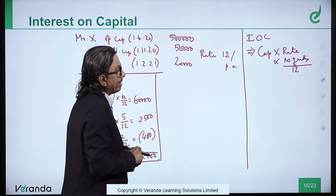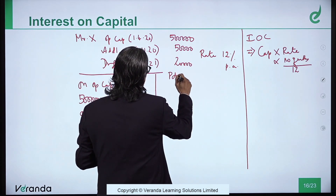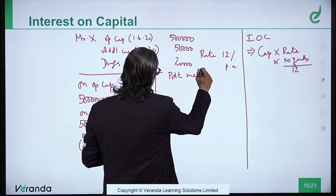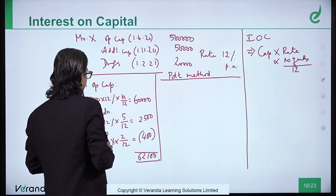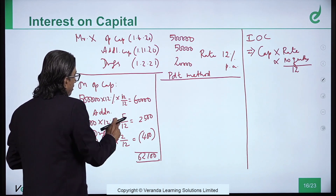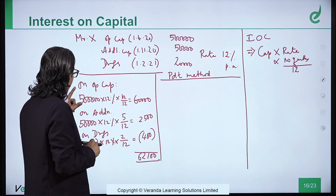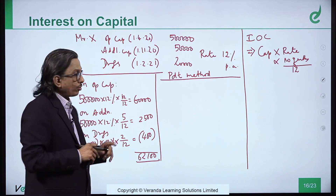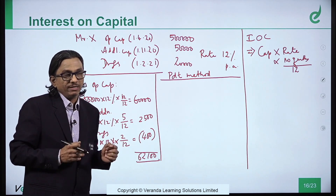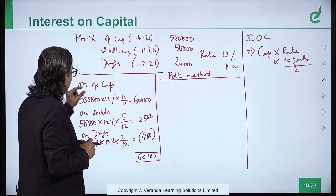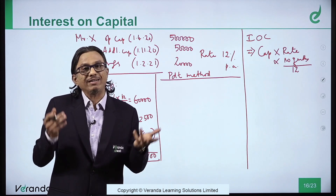Interest on capital can also be calculated by the product method. In this method, since 12% and division by 12 are constant, we take them outside. We multiply each amount by the number of months to get the product, find the total of all products, then apply the rate and divide by 12. Opening capital 5,00,000 × 12 months = product 60,00,000. Additional capital 50,000 × 5 months = 2,50,000. Drawings: minus 20,000 × 2 months = minus 40,000. Sum of products = 62,10,000. Interest = 62,10,000 × 12% × 1/12 = 62,100.